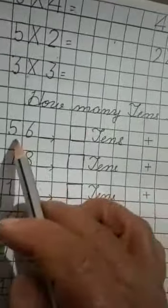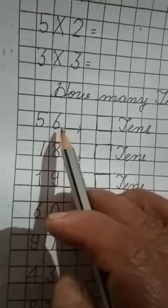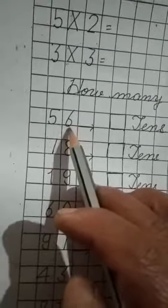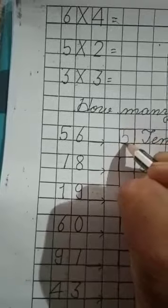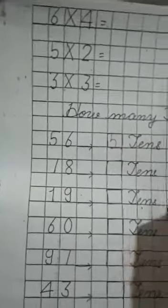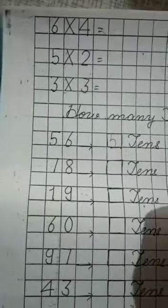Firstly, 56. How many ones? 6. And tens? 5. So, 5 tens and 6 ones.